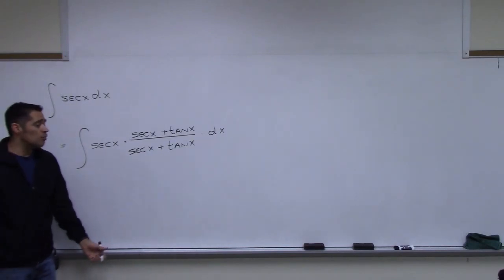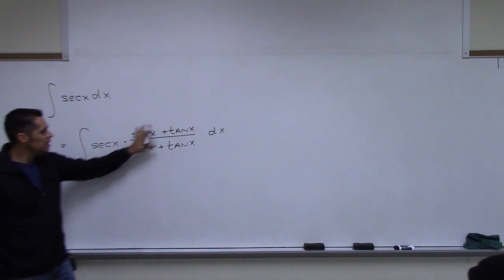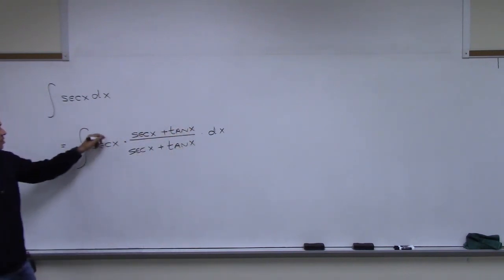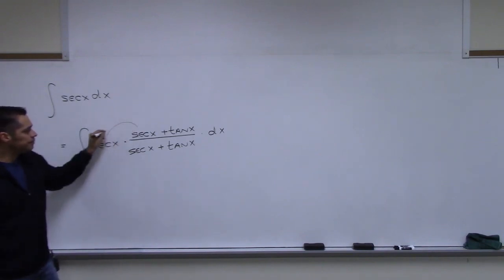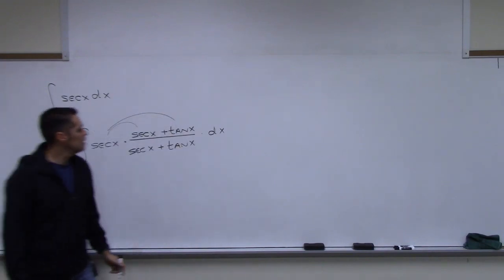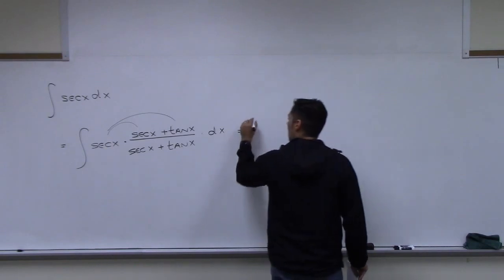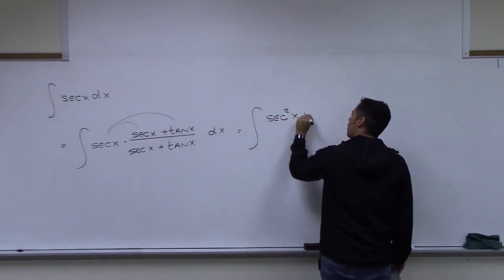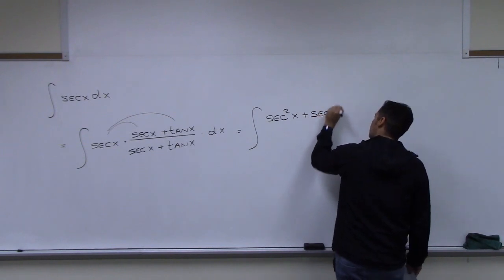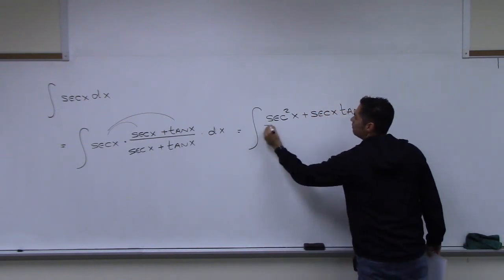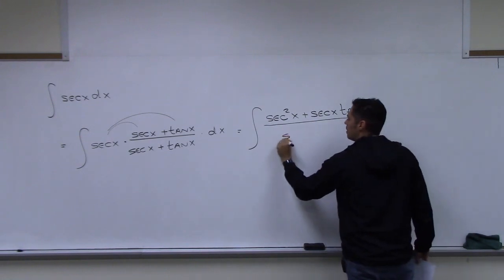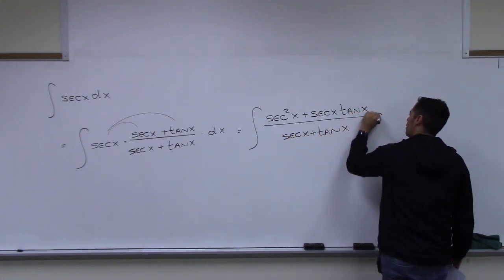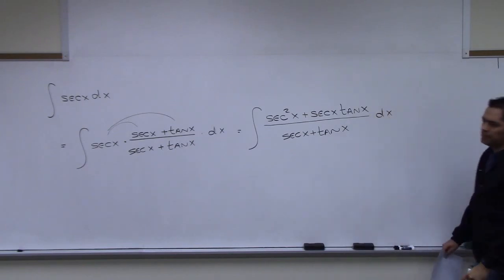If you're clever enough to figure out to put that in, let's see what happens. We distribute secant through the top and get the integral of (secant squared x plus secant x tangent x) all over (secant x plus tangent x) dx. That's just multiplication.